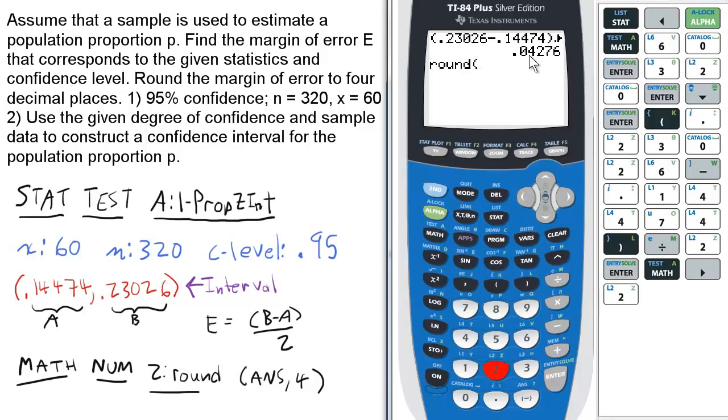that's the answer we just had, 0.04276. Without having to re-enter it, press 2nd and the negative symbol for ANS, comma, four for four decimal places, and enter.